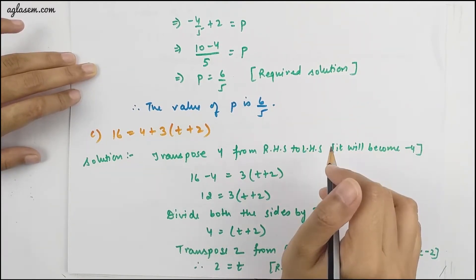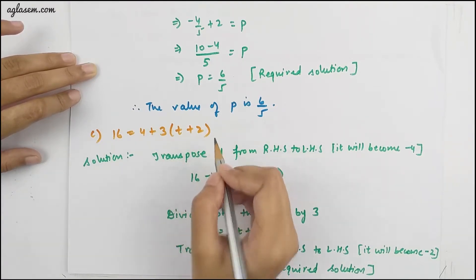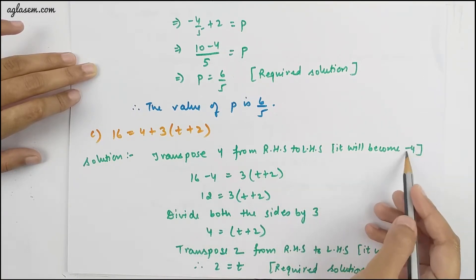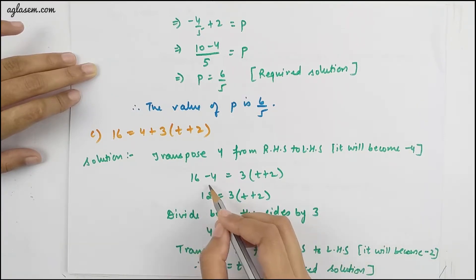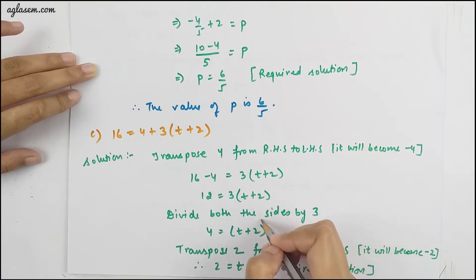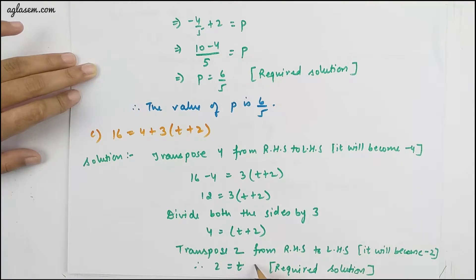The C part is 16 = 4 + 3(t + 2). Transposing 4 from RHS to LHS, it becomes −4. So 16 − 4 = 3(t + 2). Dividing both sides by 3, we have 4 = t + 2. Transposing 2 from RHS to LHS, it becomes −2. From there, the value of t = 2.